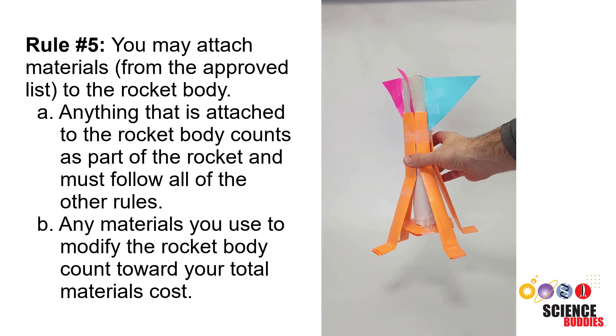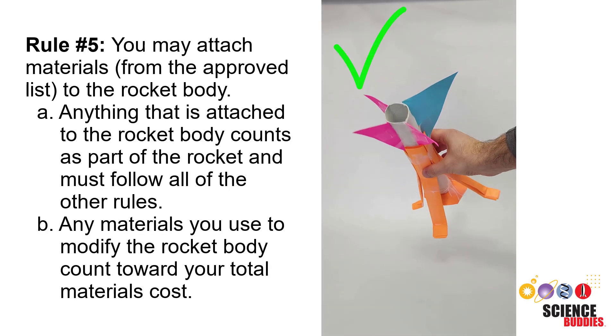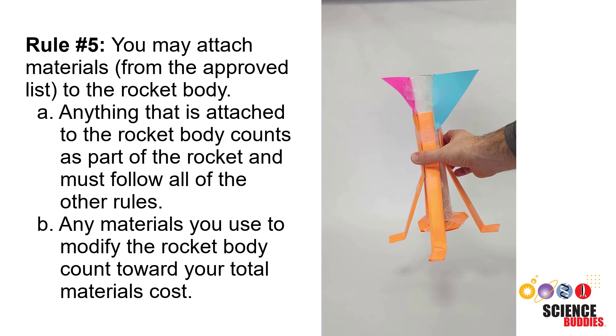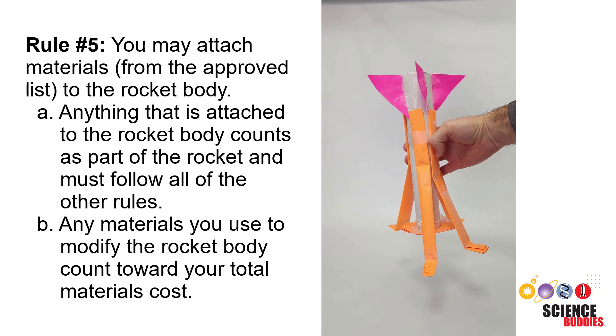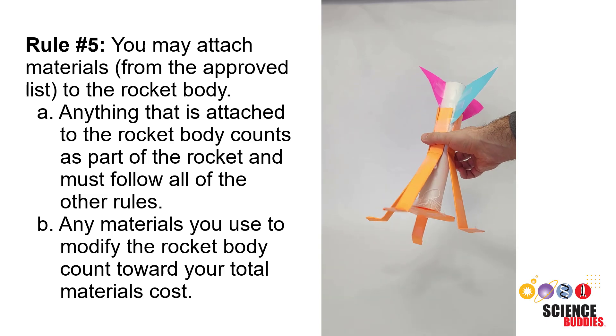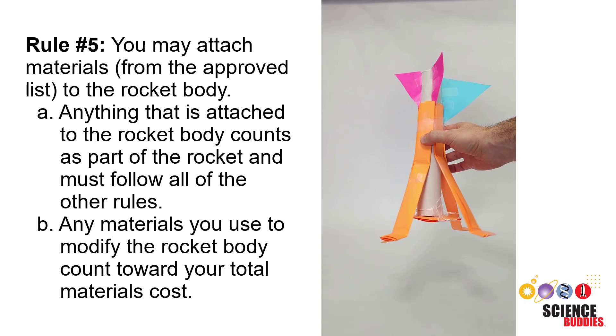Rule five: You may attach materials from the approved list to the rocket body. Anything that is attached to the rocket body counts as part of the rocket and must follow all of the other rules. Any materials you use to modify the rocket body count towards your total material cost.